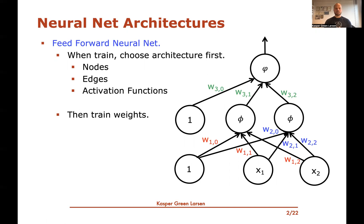When you train a neural network, the only thing that changes are the weights. So we're updating these weights that are shown in different colors — the weights on the edges of the neural net — but the activation functions stay fixed, the edges stay fixed, and the nodes stay fixed.